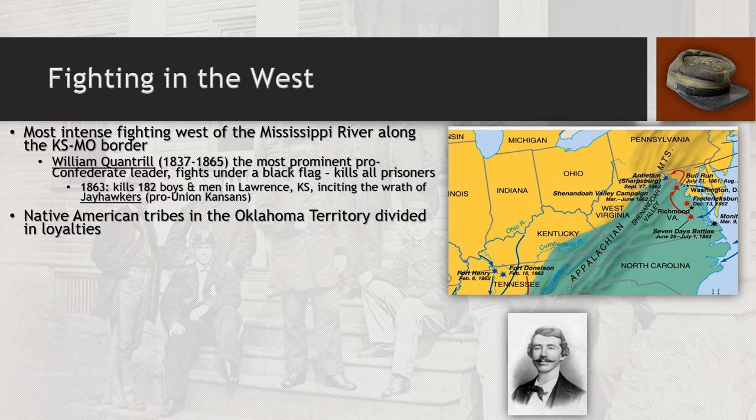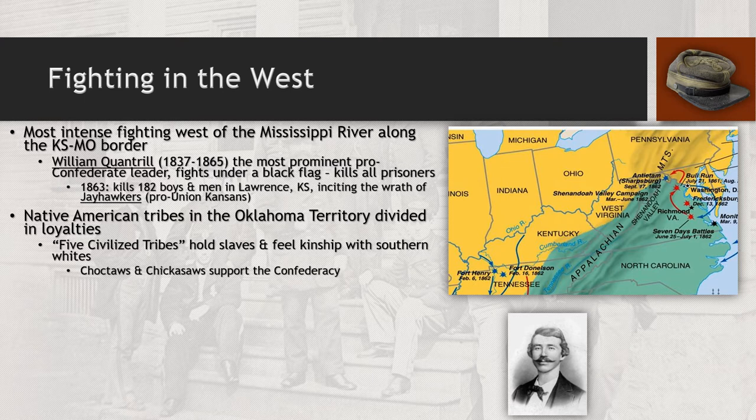The conflict also sees the cooperation of some Native Americans, specifically those living in the Oklahoma Territory — where most Native American tribes who used to live east of the Mississippi River were relocated after the Jacksonian period due to the Indian Relocation Act. A group of the so-called five civilized tribes, including the Choctaws and Chickasaws, openly support the Confederacy, as they actually held slaves and felt some kinship with Southern whites. The Cherokee, Creek, and Seminole are more divided, with the Cherokees split into two separate factions.